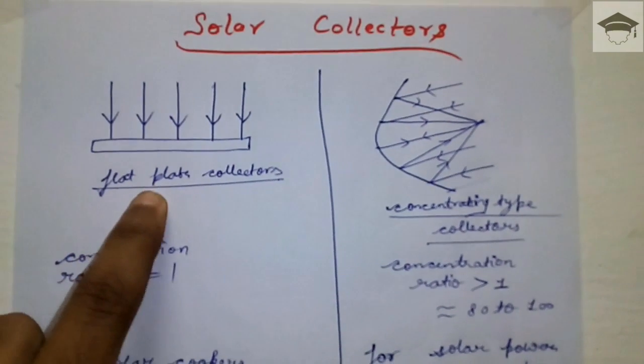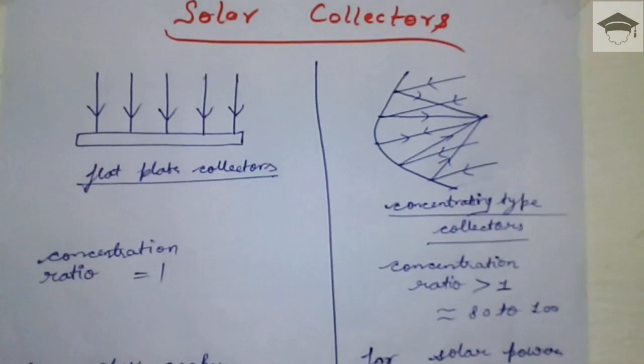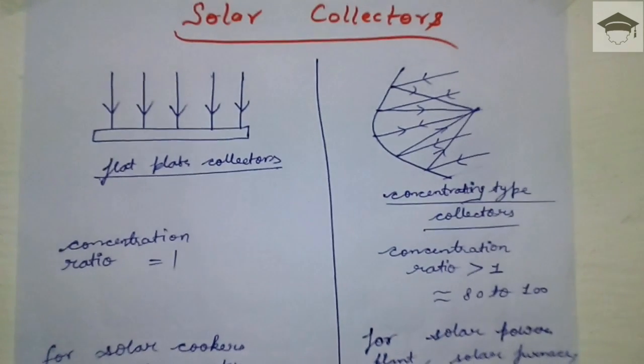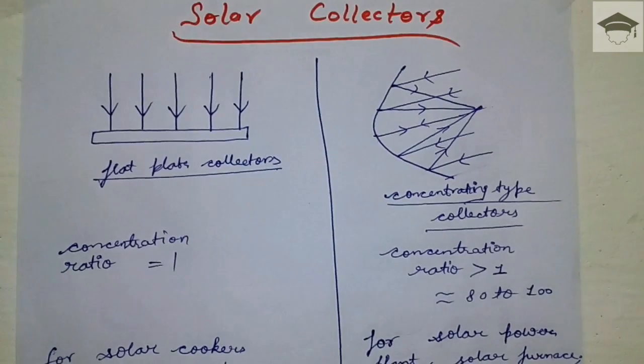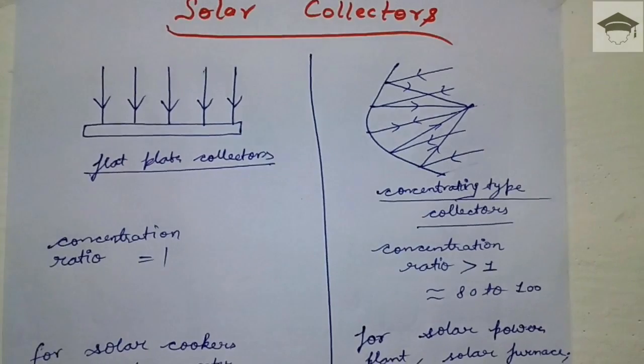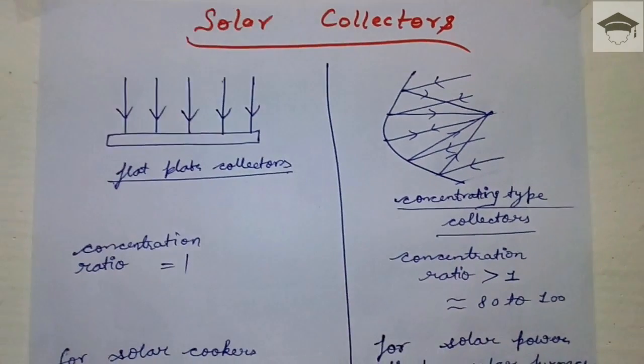For flat plate collectors, the concentration ratio equals one because the actual area equals the aperture area. Here, the concentration ratio is the ratio of aperture area to focus area.